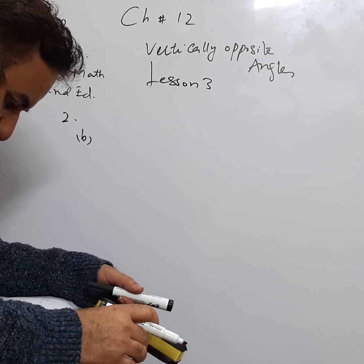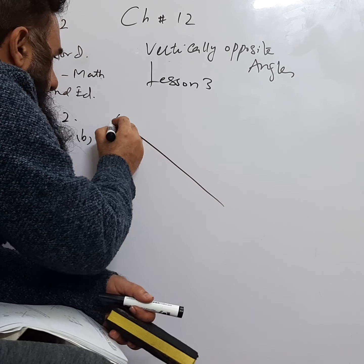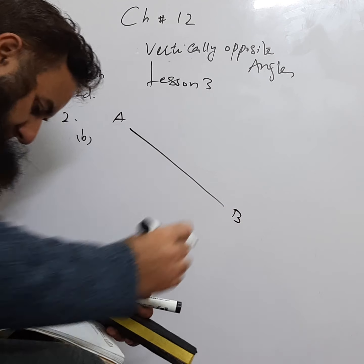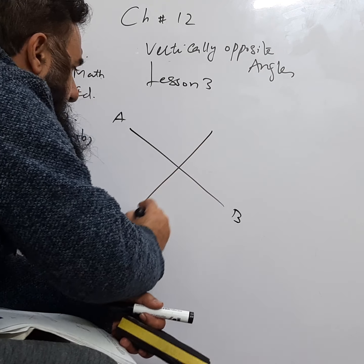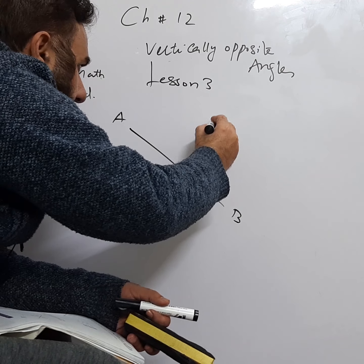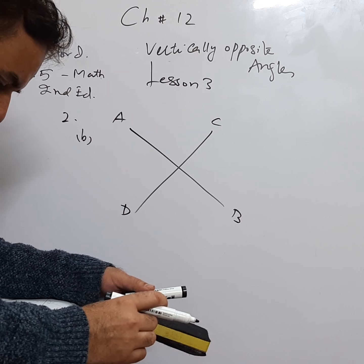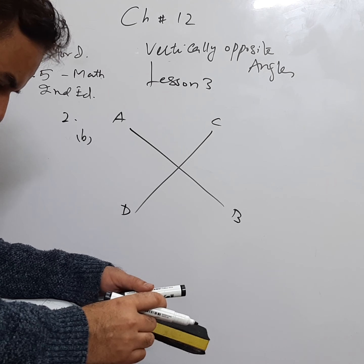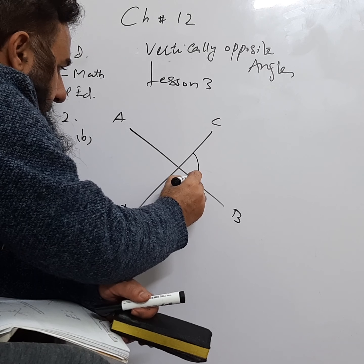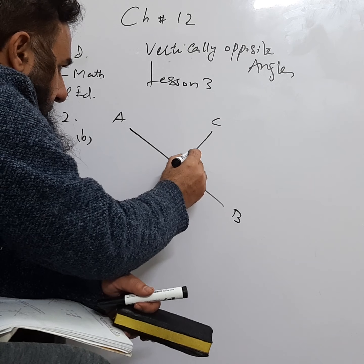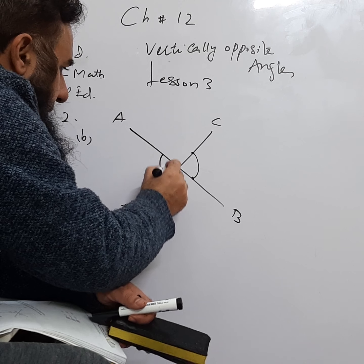Moving to part B. In part B, we have AB as one straight line and CD as the other straight line. These are two straight lines making angle X. We can say that this angle from here to here is equal to this angle from here to here, because these are vertically opposite.